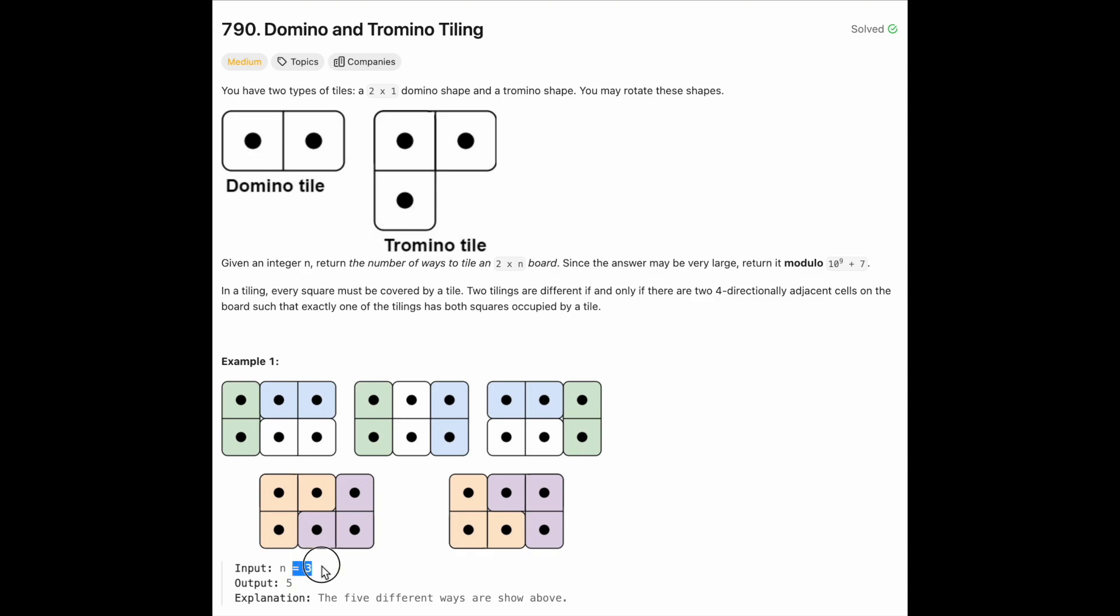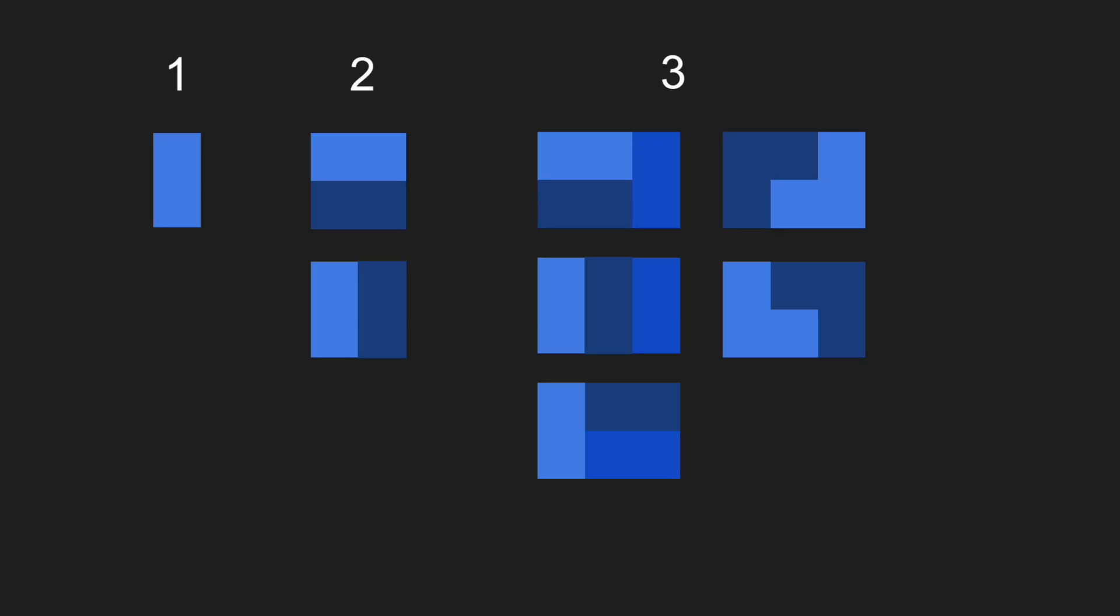So if you look at this example, when n is three, we can tile it five ways, which are shown over here. So that's why we return five. So now that we have seen some examples, let's get to how we can solve this problem. So one way that we can solve this is we can use dynamic programming with recursion.